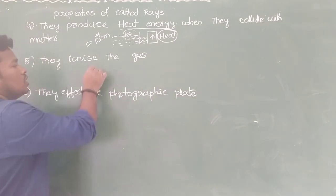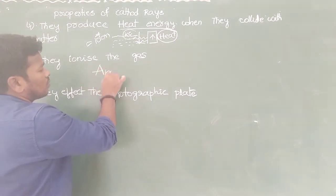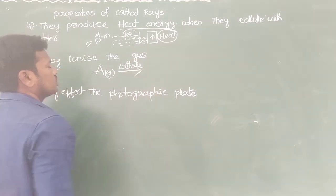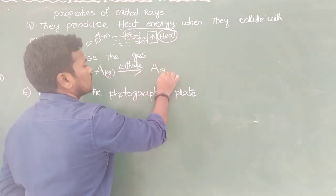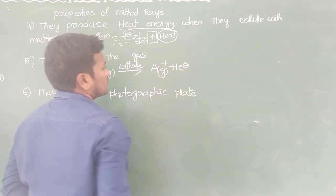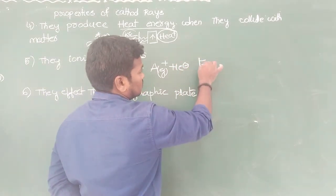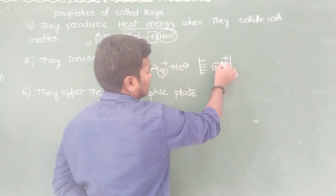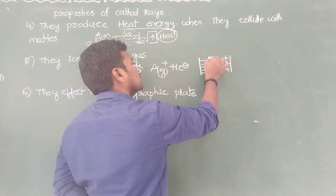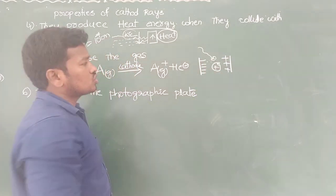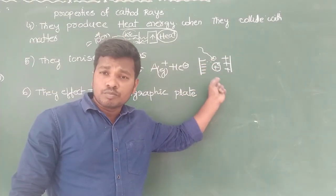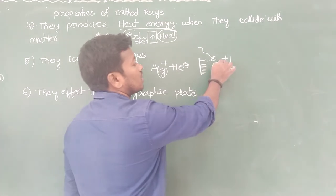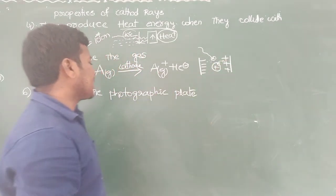Fifth, cathode rays ionize gas molecules. When cathode rays pass through a gas molecule, they ionize it. Since cathode rays are negatively charged particles, when they approach a gas molecule, the electron in that molecule experiences repulsion. To avoid the repulsion, the electron comes out, and in this way the gas molecule is ionized.